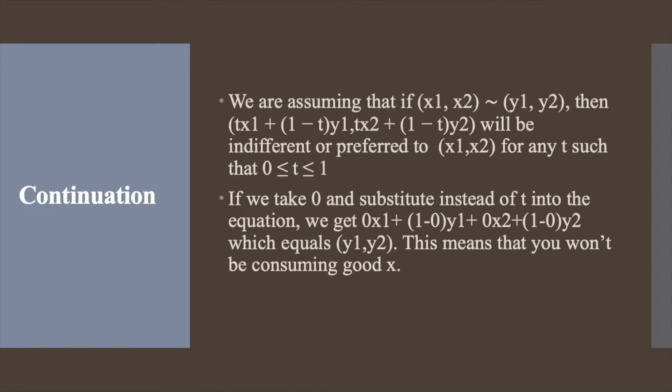Thus, we are assuming that if (x1, x2) is indifferent to (y1, y2), then (tx1 + (1-t)y1, tx2 + (1-t)y2) will be indifferent or preferred to (x1, x2) for any t such that 0 ≤ t ≤ 1.